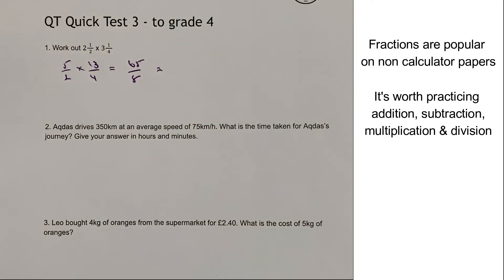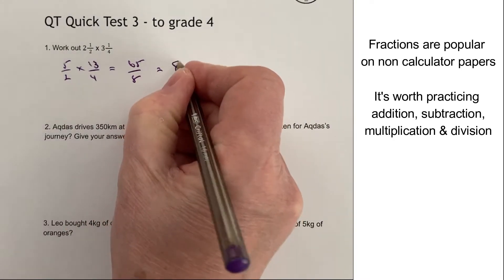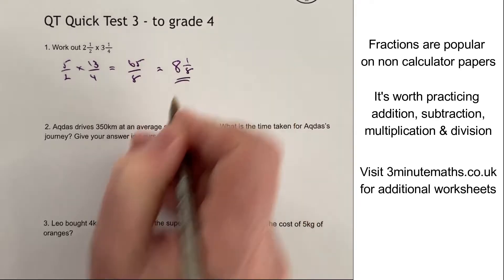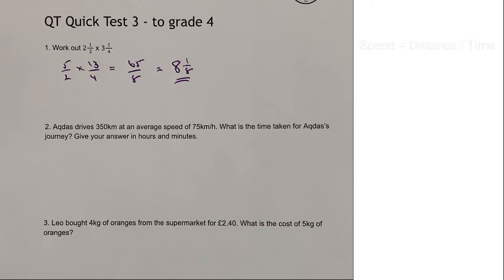If I convert that back to a mixed number again, that's going to be 8 wholes and then I've got 1 out of 8 left, and that would be the answer to that particular question. Okay, let's move on to the second one.